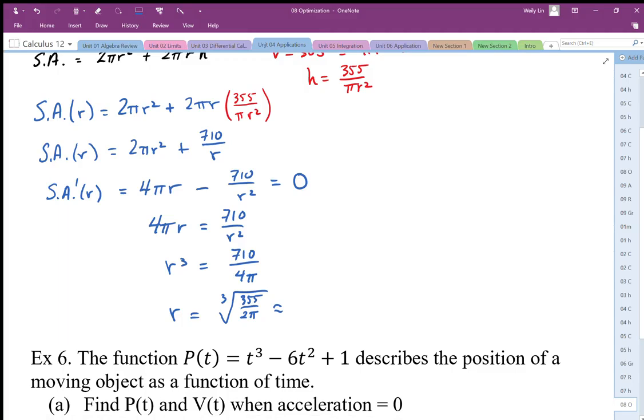I'm going to end up with 355 divided by 2π, and I'm going to take the cube root of that. I end up with a radius of approximately 3.837, so I'm going to round that to 3.84 centimeters.